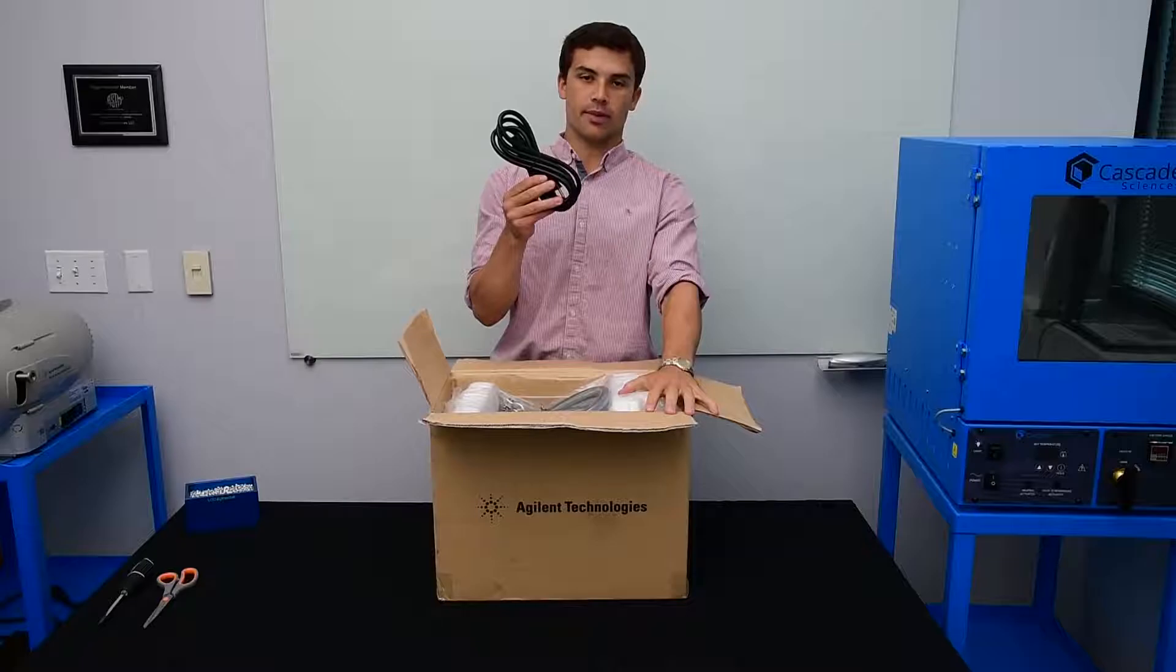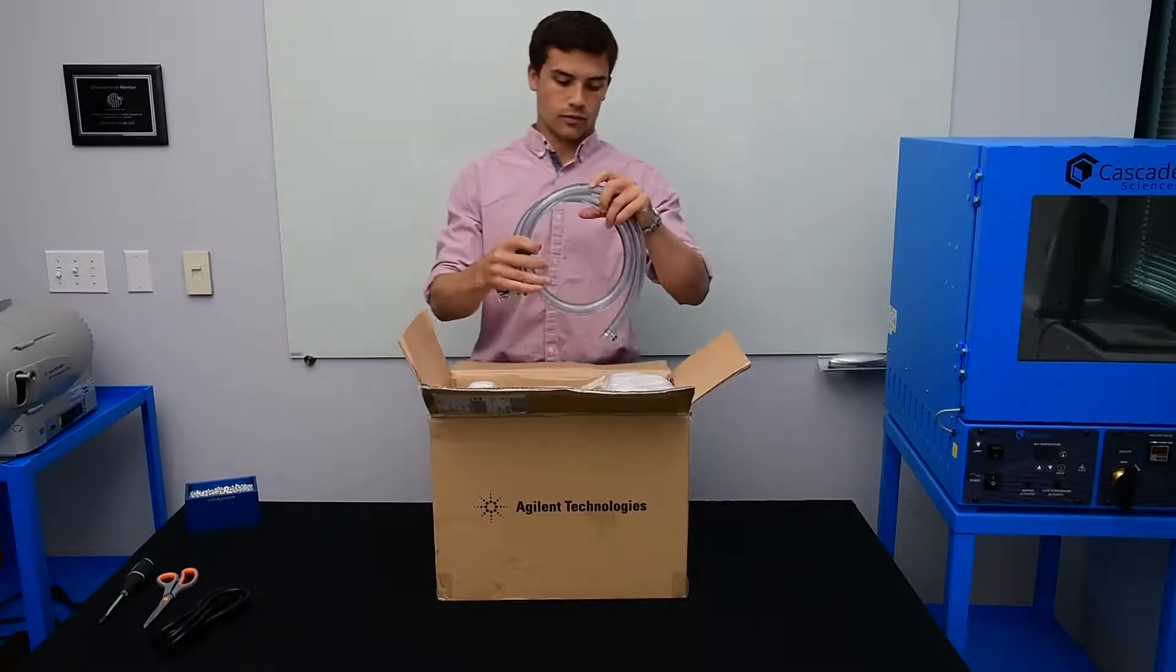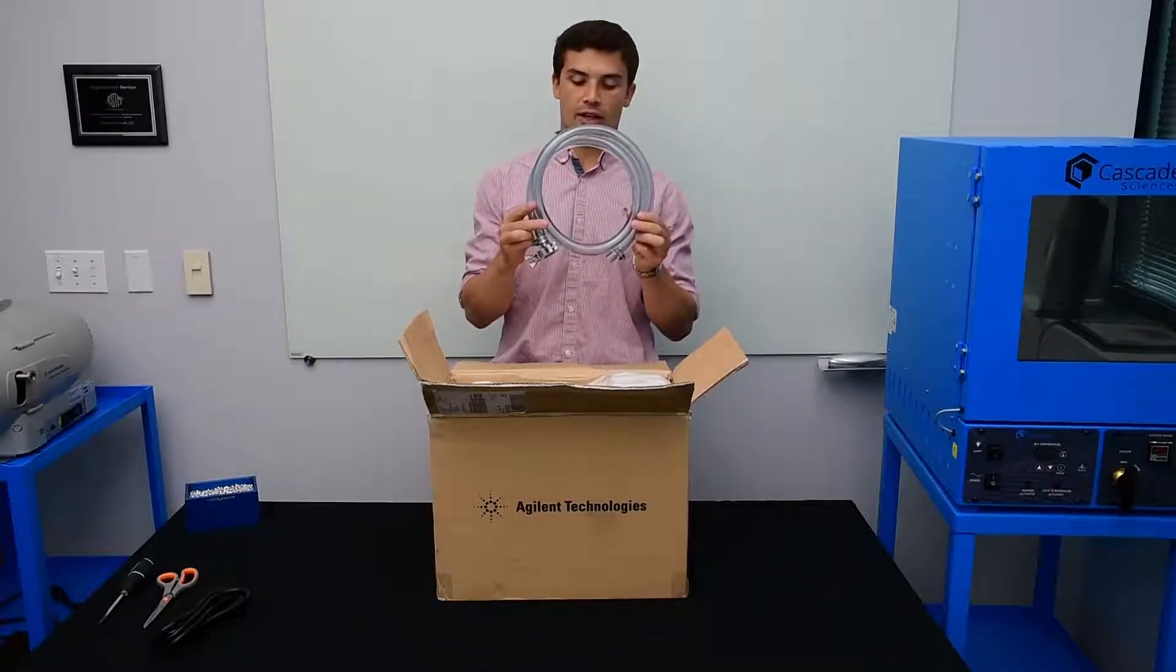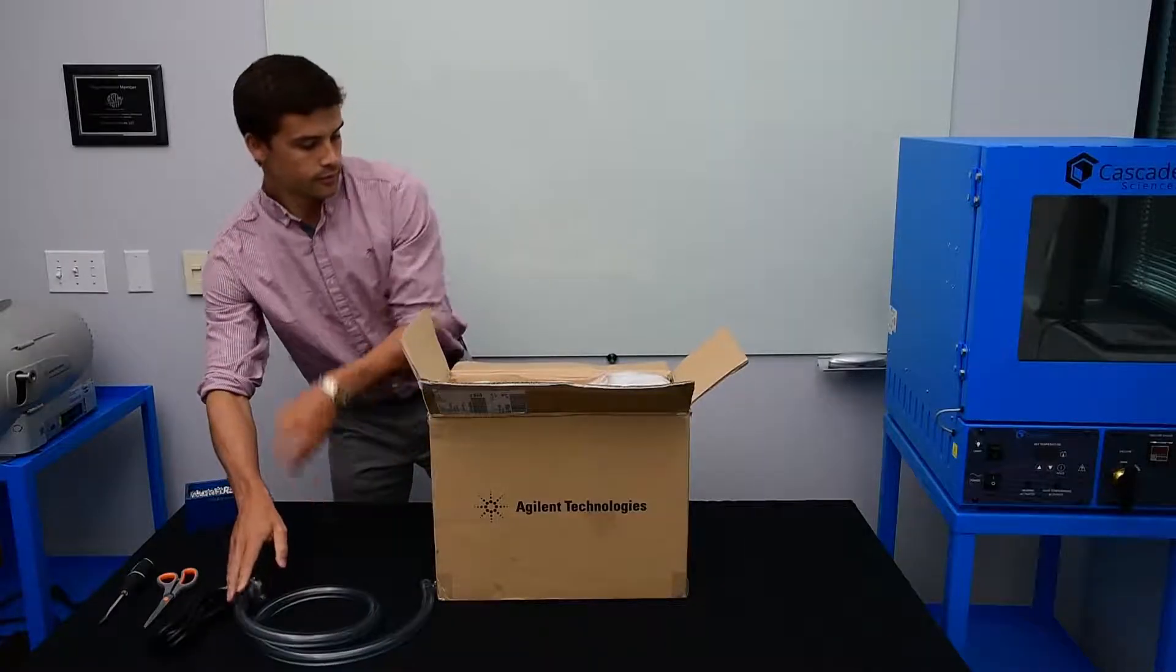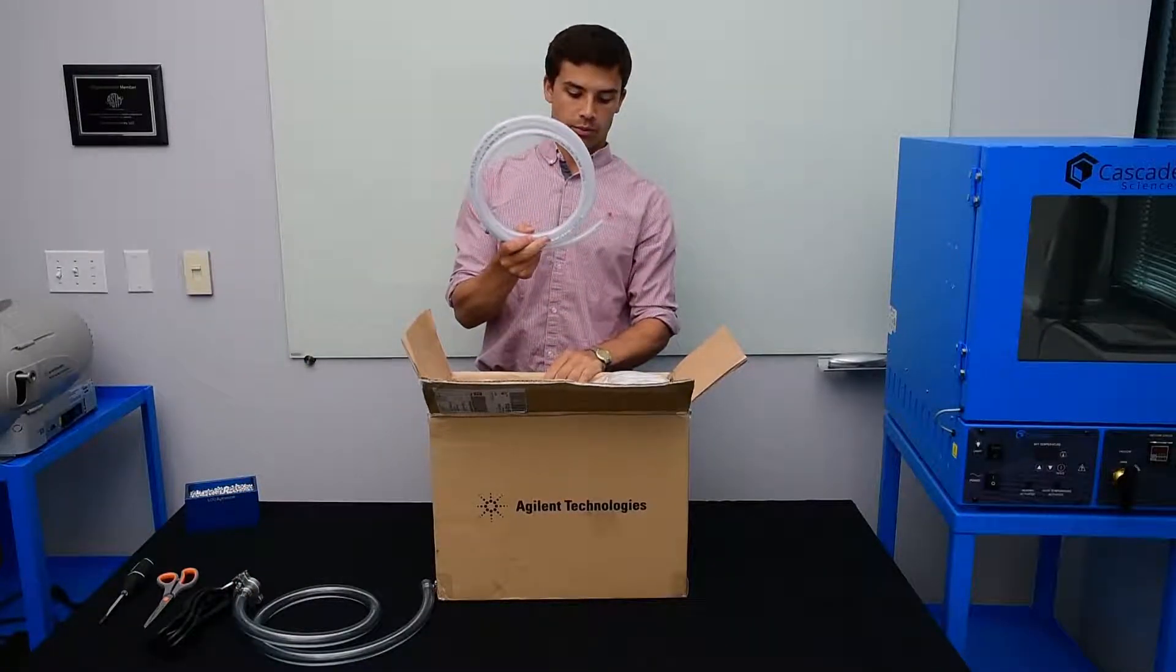First we'll pull out the power cord for the vacuum pump. Here is the vacuum hose that will go from the vacuum pump to the vacuum oven. And here is the exhaust hose for the vacuum pump.